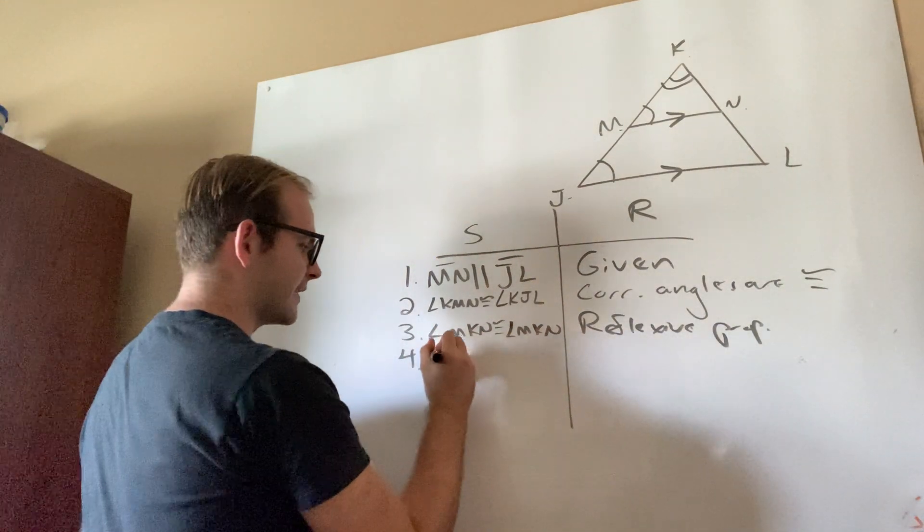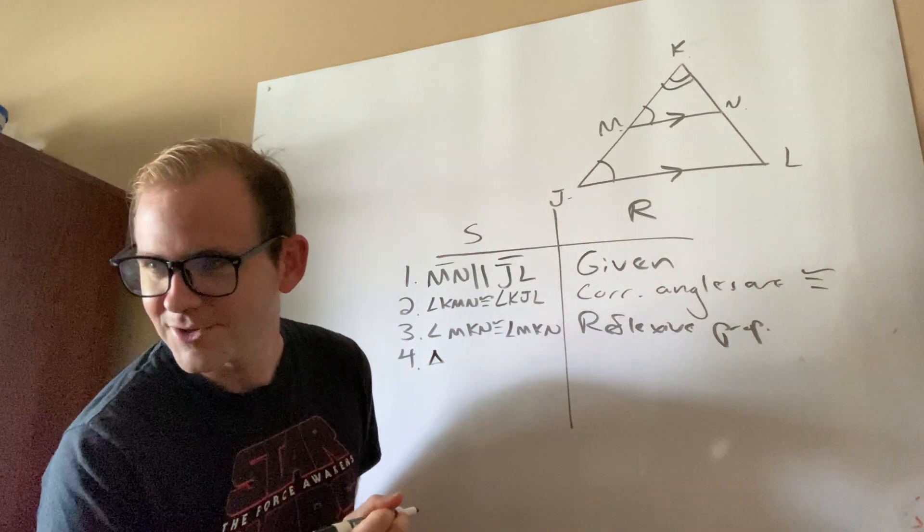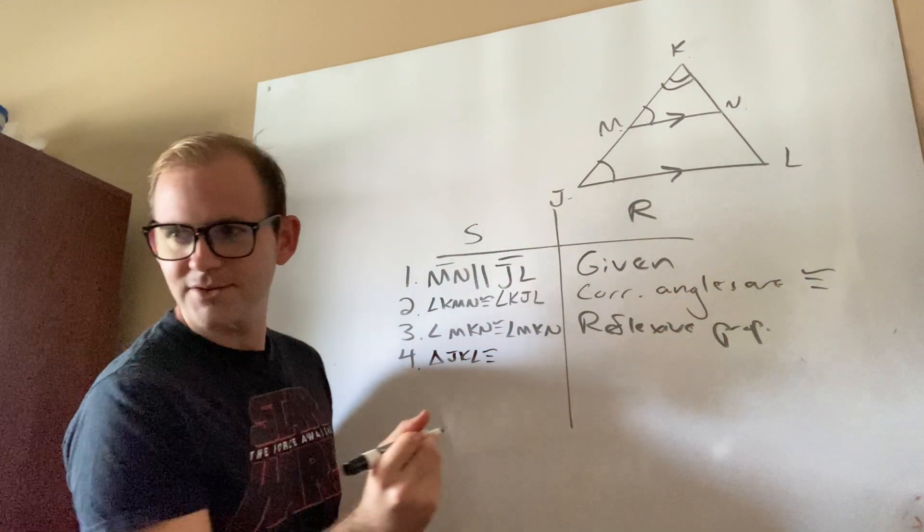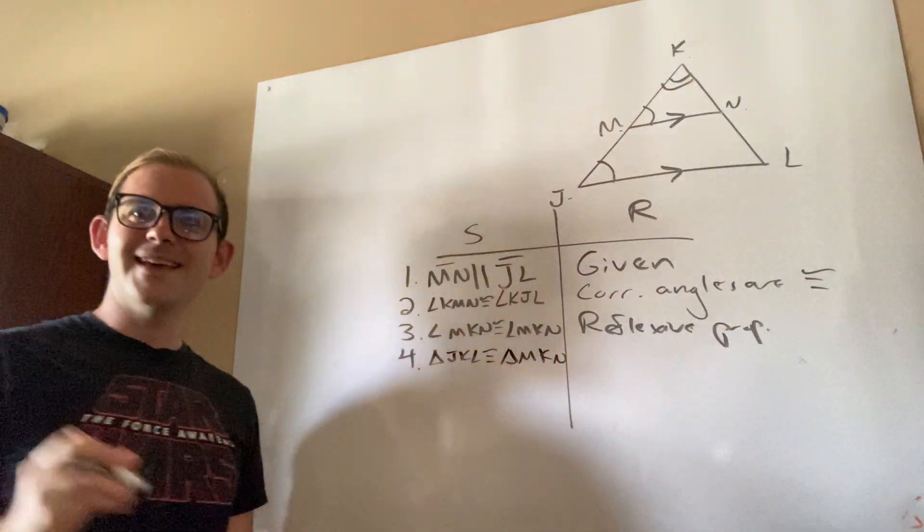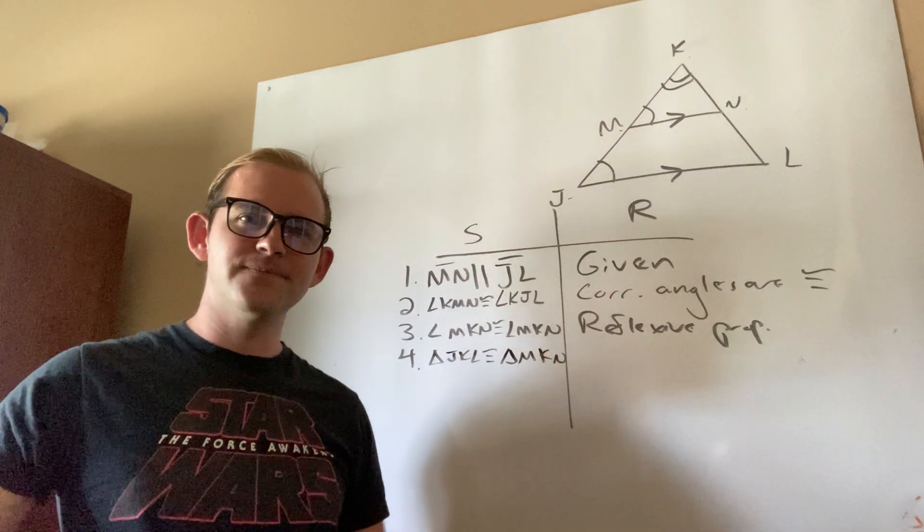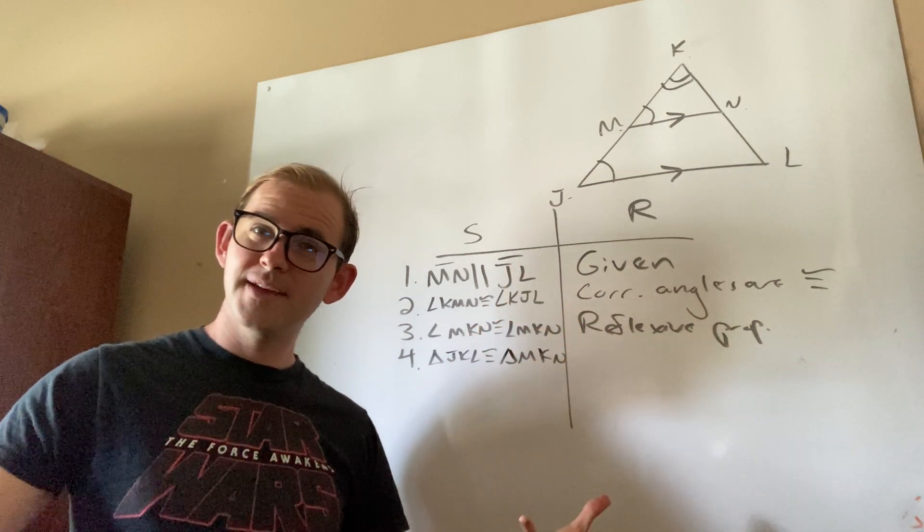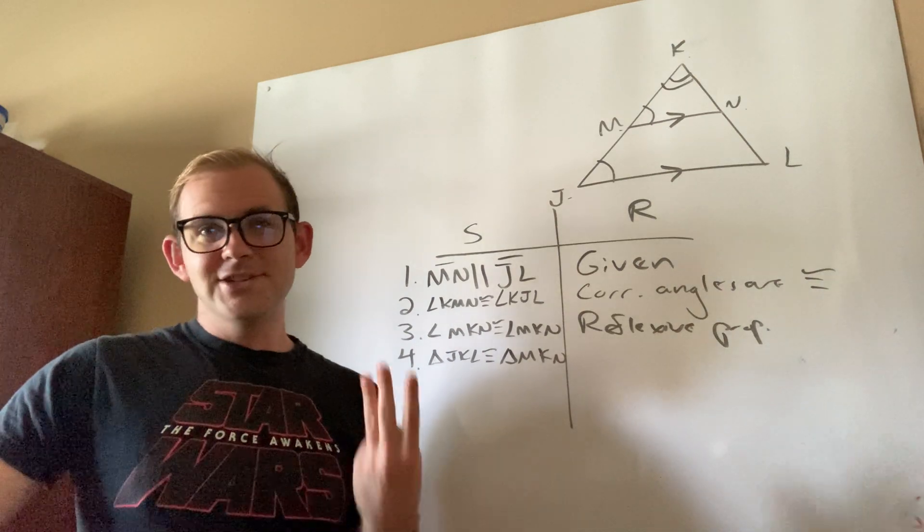Now, they were super, super nice here, and they actually told us, oh my gosh, triangle JKL, JKL is congruent to triangle MKN. Now, the nice part, if I follow my strategy and I actually draw everything that I know as I go through the proof, I can actually read it right off this diagram.